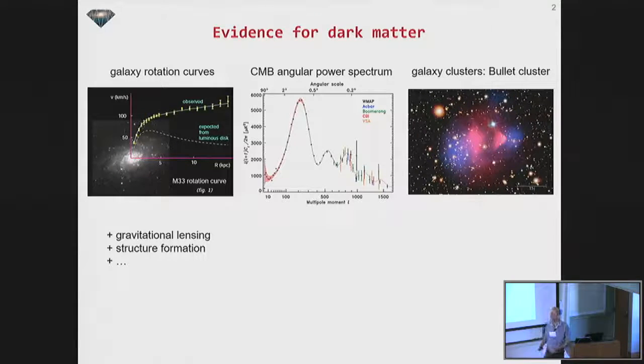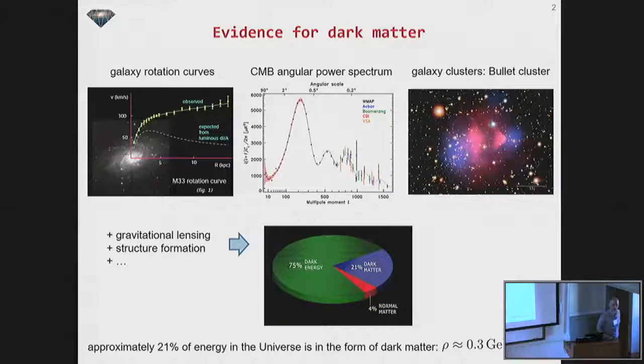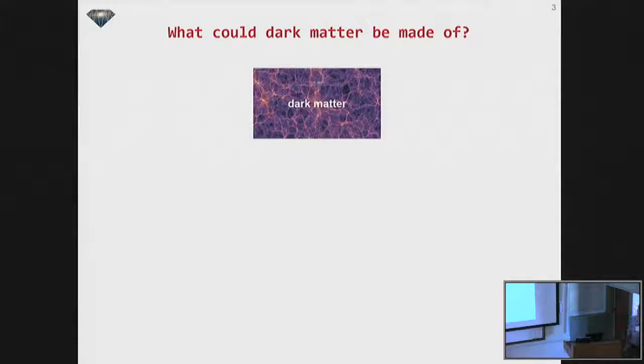Doug spoke very eloquently about that. So basically, there's a number of pieces of evidence that all point to about 0.3, maybe 0.4 GeV per cubic centimeter energy density that kind of sits in dark matter.